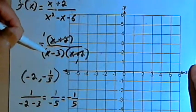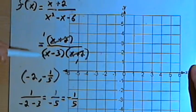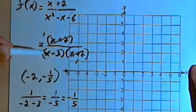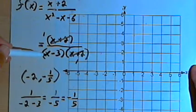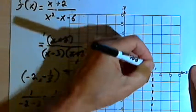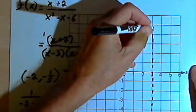One of the factors, or the remaining factor, that I have in my rational function is x minus 3, which means I'm going to have a vertical asymptote at x equals 3. So I'll just put in a dotted line along here where x equals 3.